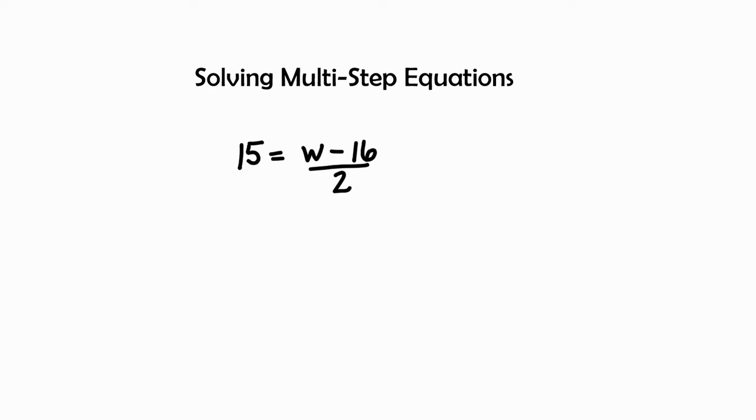In this video, you'll be learning how to solve multi-step equations. Our example for you today is 15 equals w minus 16 all over 2. Now we need to isolate our variable—that is our main objective.